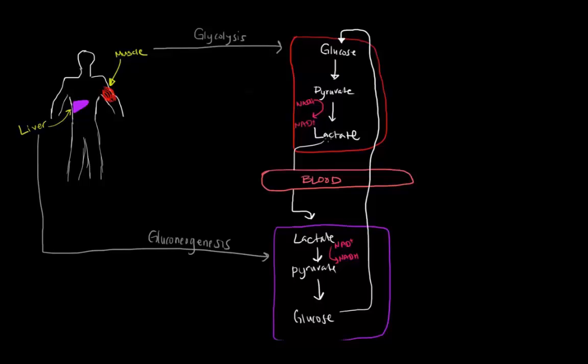This lactate is going to go through our blood all the way to our liver. So lactate is going to go from here from the muscles to our liver via the blood circulation.